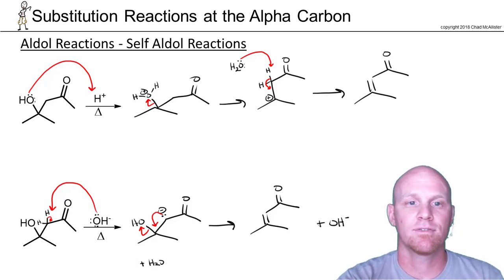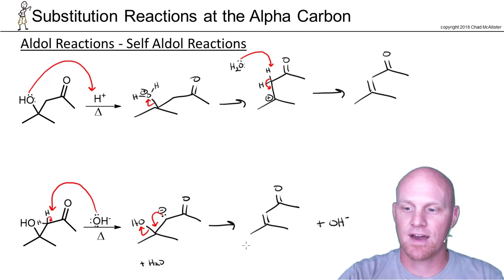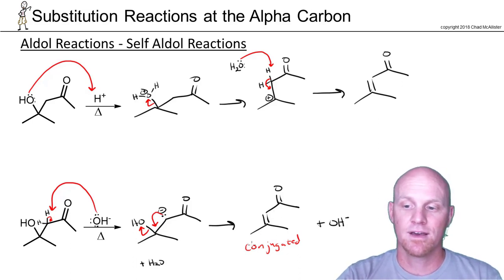The big thing that's governing this, or at least allowing it to happen, is the fact that we're forming a conjugated product. Notice double, single, double. That conjugated product means lower energy, and this step happens to be very exothermic. That's the driving force in this reaction that allows OH to actually leave.